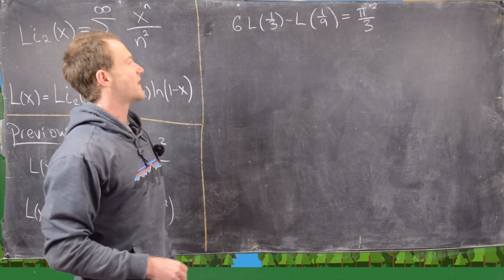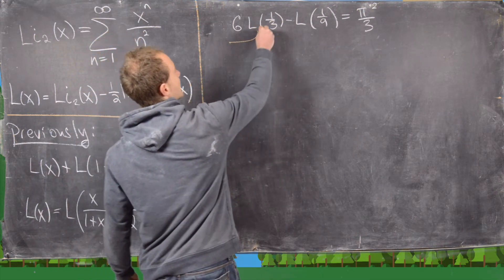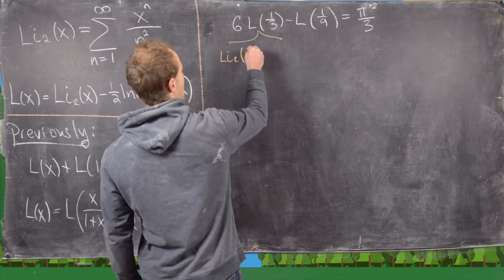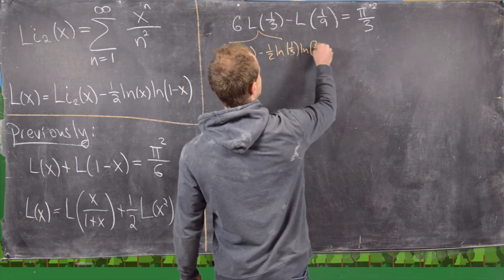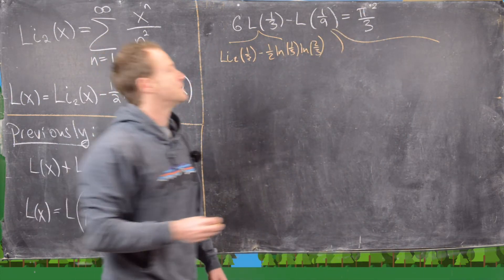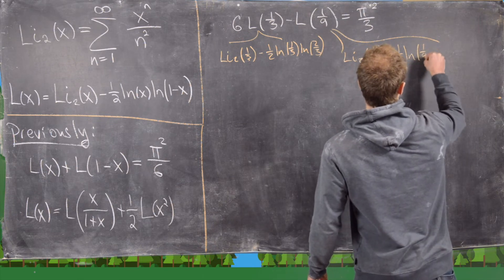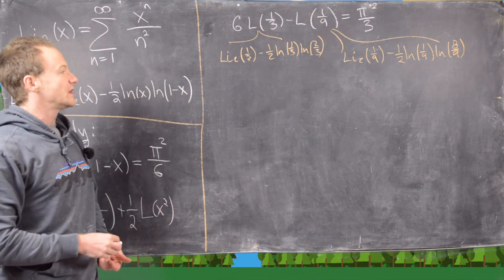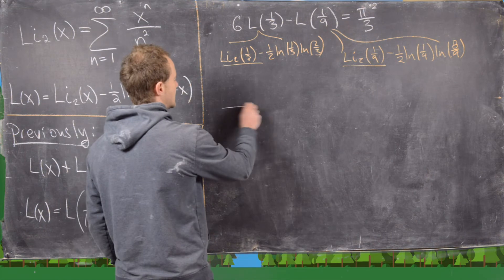On the previous board we found the identity 6 times L of one third minus L of one ninth equals pi squared over 6. Now let's recall exactly what that is. L of one third is the dilogarithm evaluated at one third, minus one half natural log of one third times natural log of two thirds. And L of one ninth is the dilogarithm evaluated at one ninth, minus one half natural log of one ninth times natural log of eight ninths. Putting that all together using the definition of the dilogarithm as an infinite sum, we get the following nice identity.